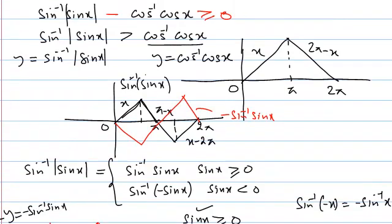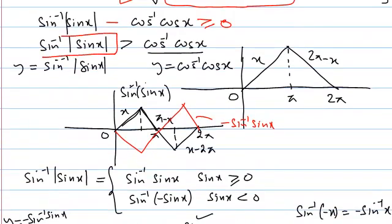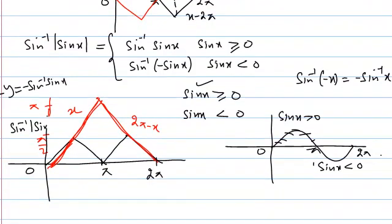We have to find those values of x where the sin⁻¹|sin x| graph is greater than or equal to the cos⁻¹(cos x) graph — i.e., where it is above or meets the cos inverse graph. So we compare the two graphs and look for where sin⁻¹|sin x| is above or equal to cos⁻¹(cos x). But cos is actually above sin in most regions.